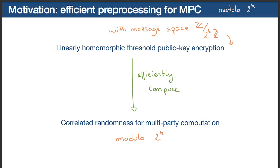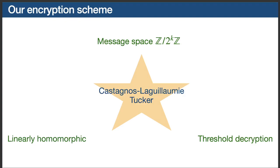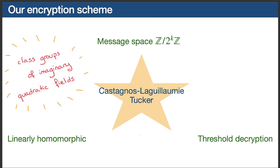Multi-party computation would benefit from an encryption scheme with such a message space that supports distributed decryption. And this is exactly what we have developed in this work: a threshold linearly homomorphic encryption scheme whose message space is Z over 2 to the kZ for any k. Our construction uses class groups of imaginary quadratic fields, like the encryption schemes modulo an odd prime q of Castagnos and Laguillaumie from CT-RSA 2015.